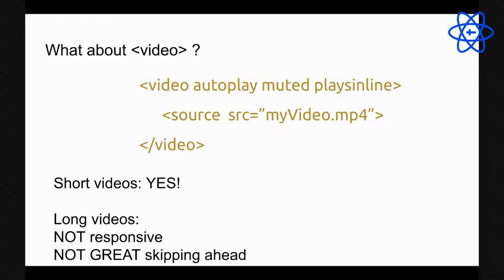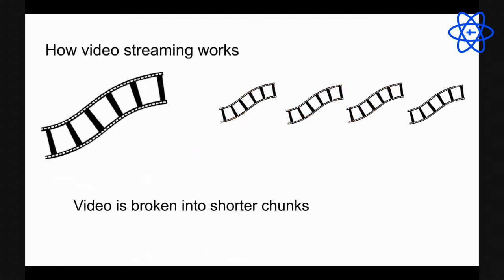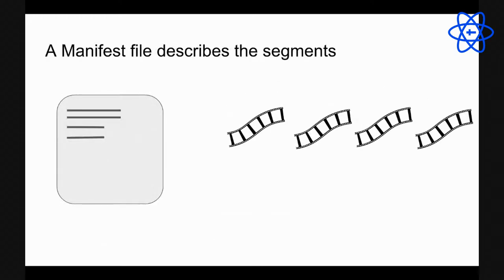The video tag is also not great for skipping ahead. The browser often downloads everything in between. The way video streaming works is you break the big video into little chunks, usually four to ten seconds each. For live streaming, shorter chunks are better because each chunk has to be downloaded before you can watch it, and bigger chunks add more latency.